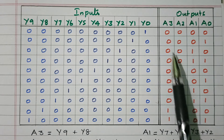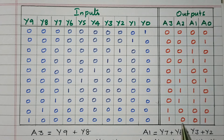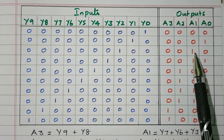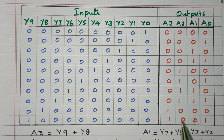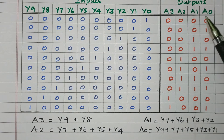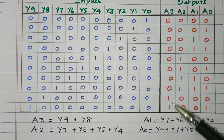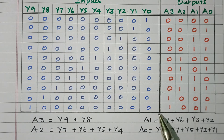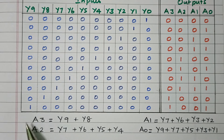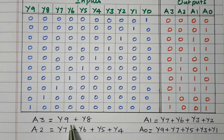With 4-digit outputs we would have 16 combinations, but here we are using only 10 combinations (0 to 9). Now from the truth table, we derive the logical expressions. For A3, Y9 and Y8 are the only inputs where A3 is 1, and all other terms are 0. So the logical expression for A3 is: A3 = Y9 + Y8.